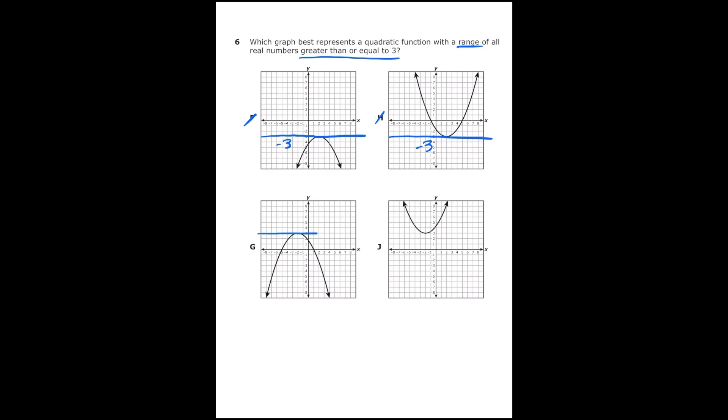Letter G, I noticed that my graph goes up to three on the y-axis, and it never goes above that. So my range is all real numbers less than or equal to positive three, which again is not correct. And then on letter J, I noticed that my graph goes down to positive three on the y-axis, but the graph is always above that number. So my range is all real numbers greater than or equal to positive three, which is what we're looking for. So our correct answer is letter J.